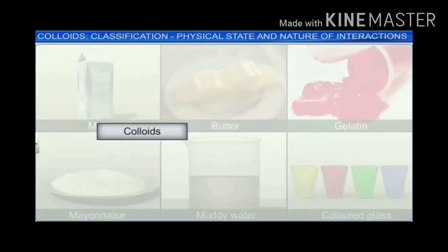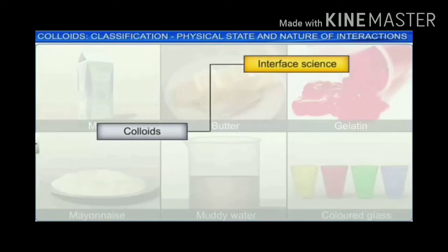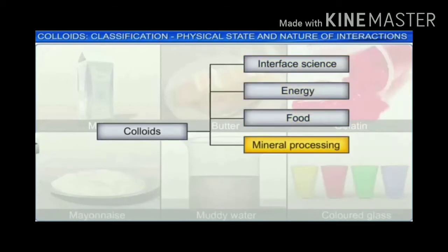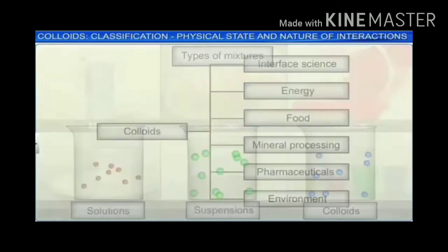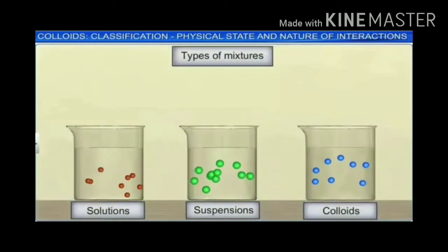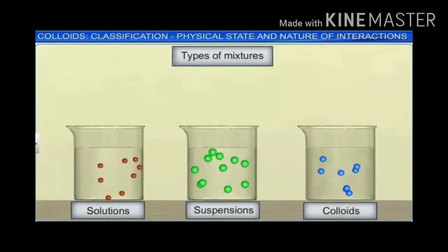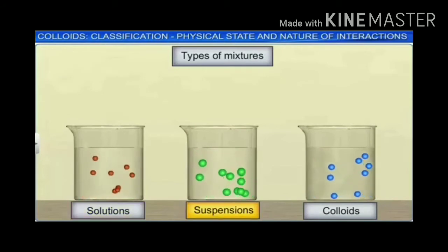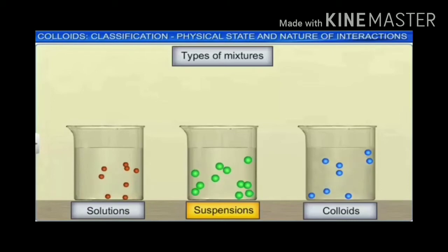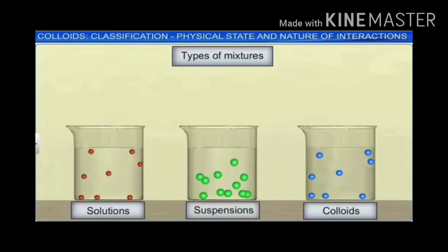Colloids play an important role in interface science and in the fields of energy, food, mineral processing, pharmaceuticals, and environment. Colloids are one of the three major types of mixtures, the other two being solutions and suspensions. The three kinds of mixtures are distinguished by the size of the constituent particles.